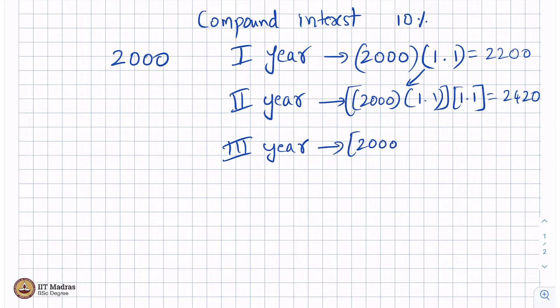At the end of third year, it's simply this 2000 into 1.1 into 1.1, whatever that was at the end of second year. Whatever you had gets compounded, which is times 1.1 - so 2420 times 1.1. But that is not what I'm here for. I'm not calculating the final answer.